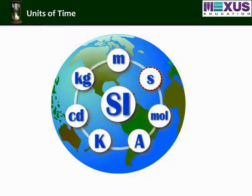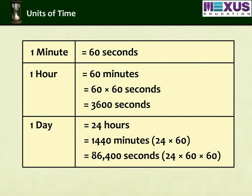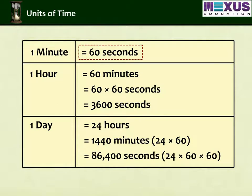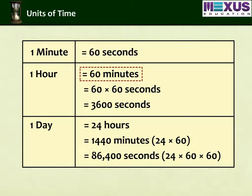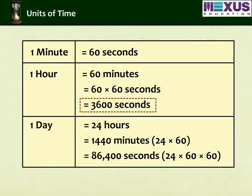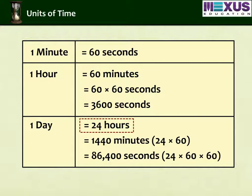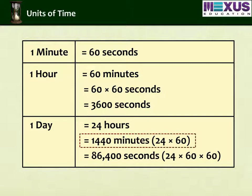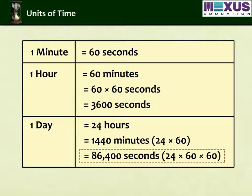Let us see units in their base form. One minute is equal to 60 seconds. One hour is equal to 60 minutes, which is 60 into 60, that is 3,600 seconds. One day equals 24 hours, that is 1,440 minutes, which are 86,400 seconds.